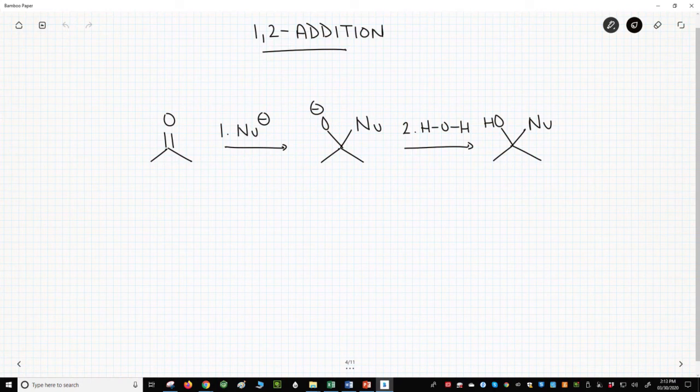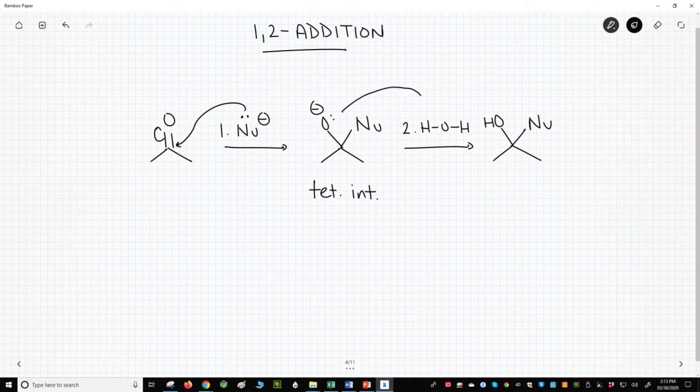A strong nucleophile attacks a carbonyl carbon, the CO pi bond breaks, and the bonding electrons are pushed onto oxygen to form a tetrahedral intermediate. Protonation, in a second step, completes the reaction.